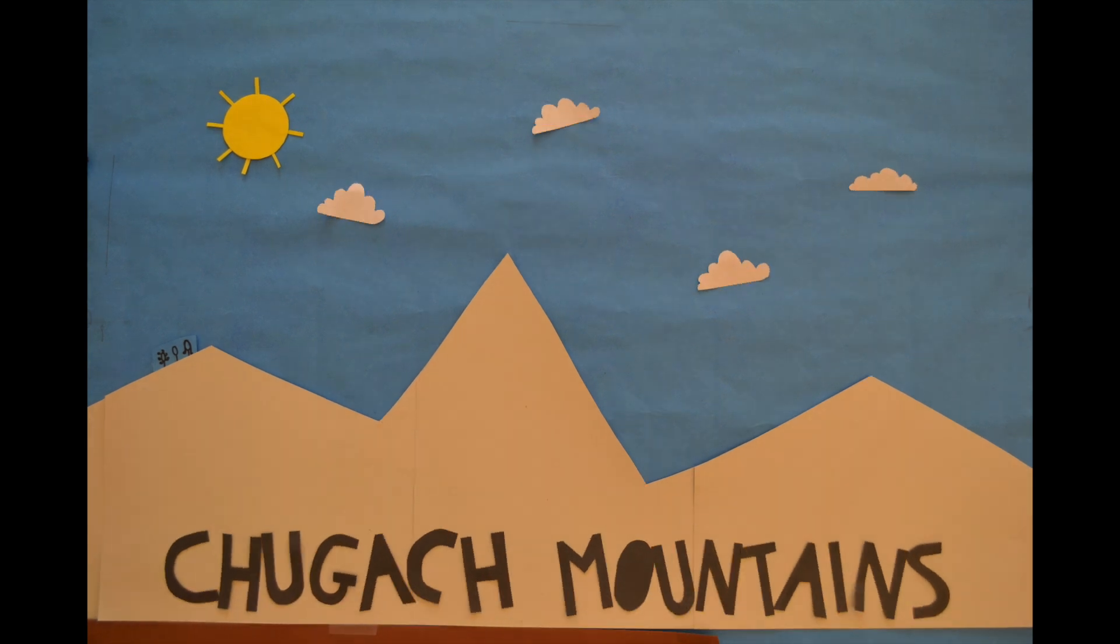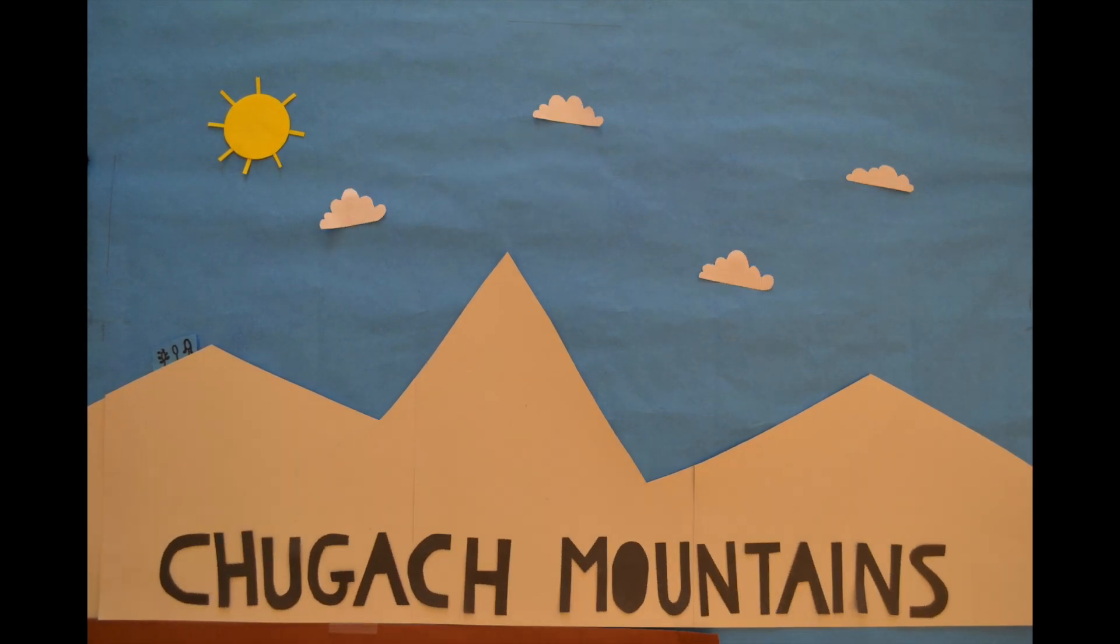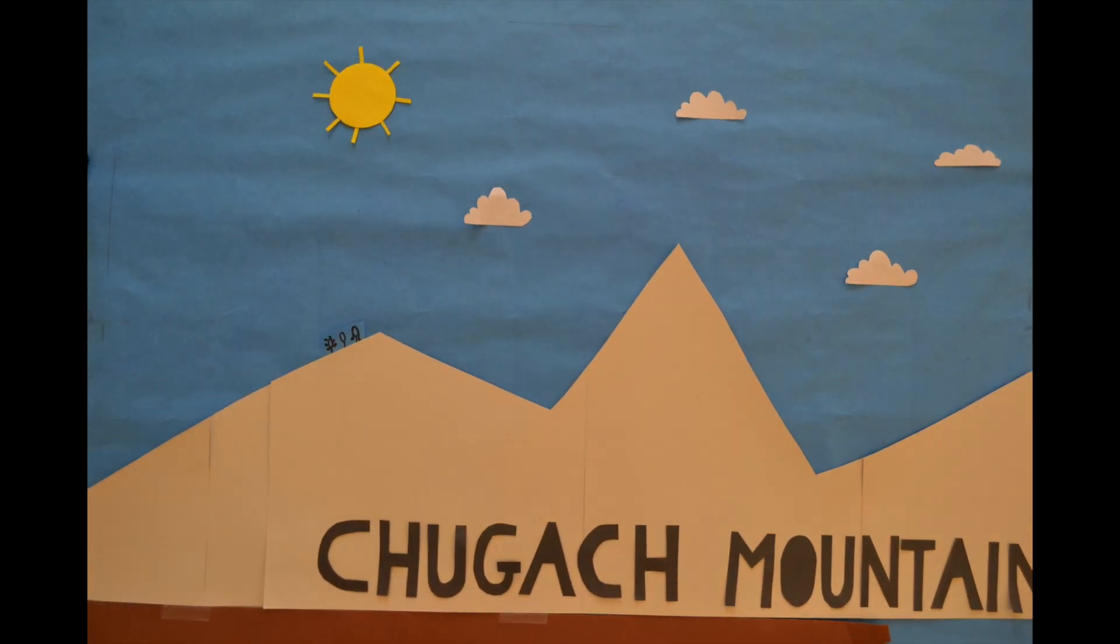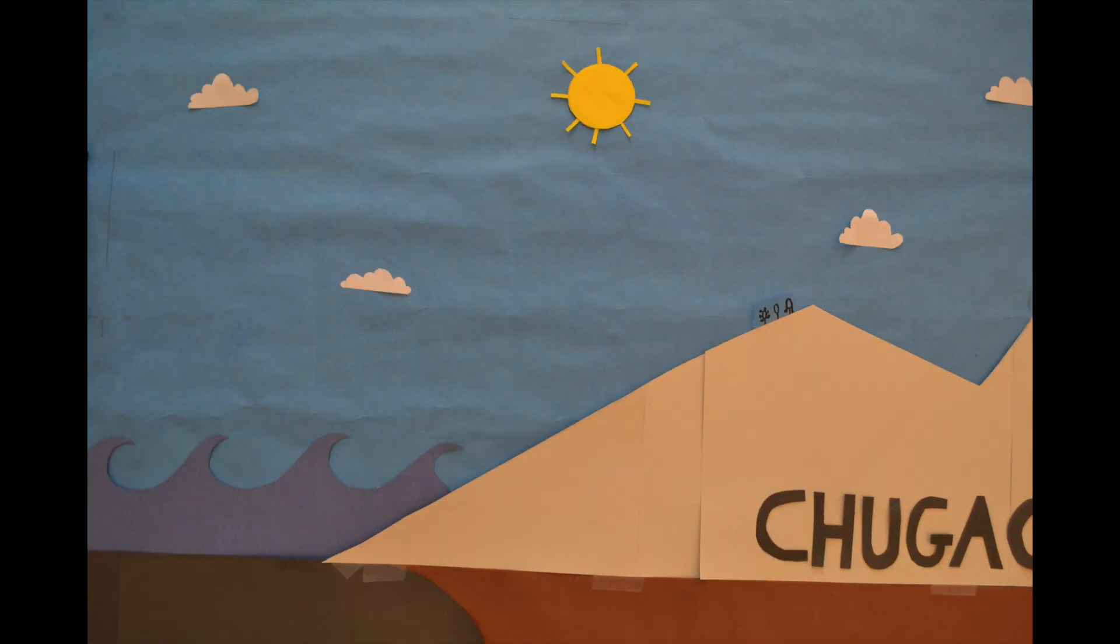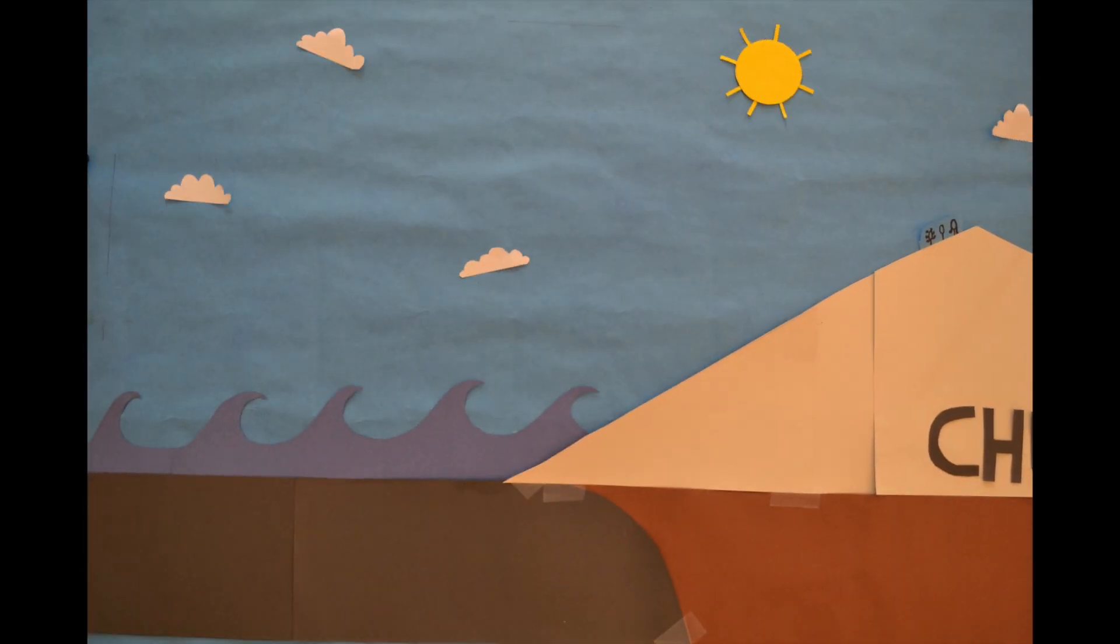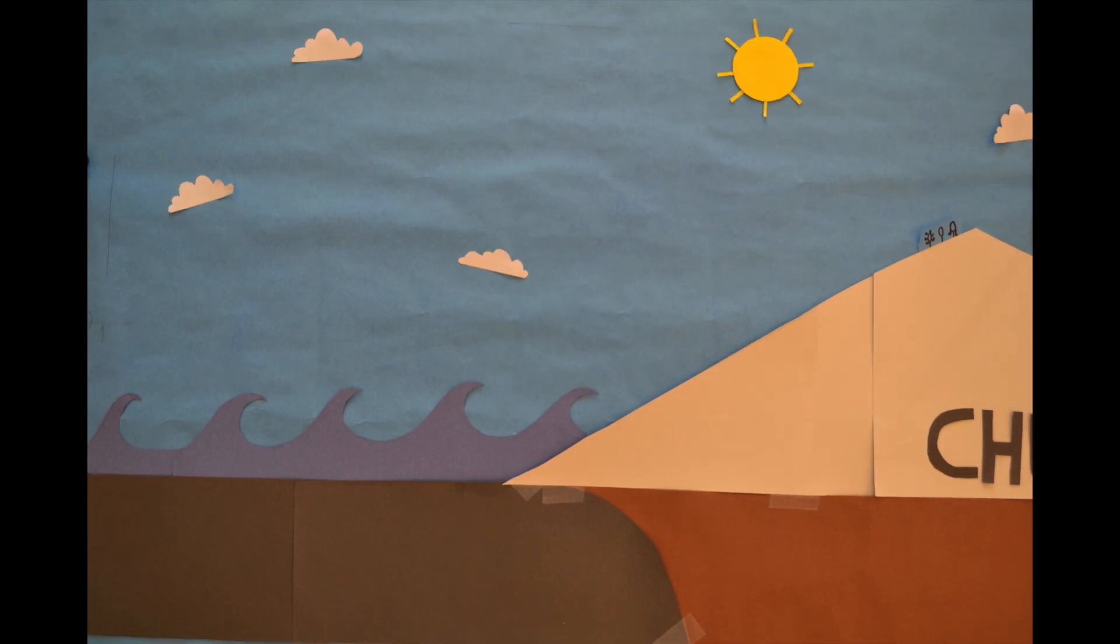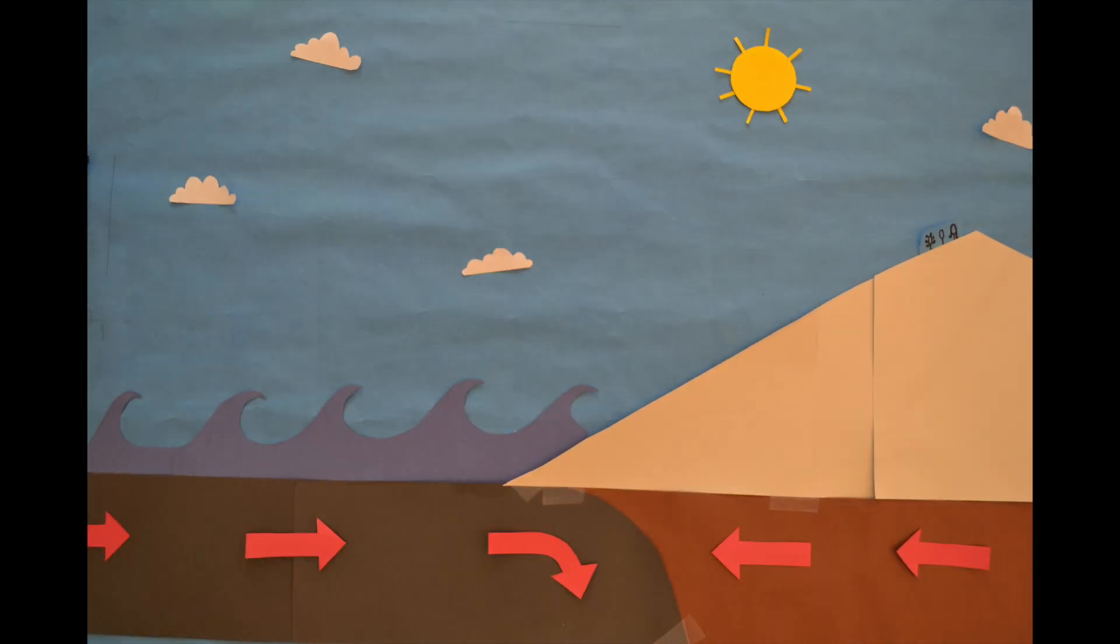The Chugach Mountains in Alaska are a great example of one way that mountains are formed. These mountains were formed due to accretion along an oceanic continental margin, causing sediment buildup along that trench. As the sinking oceanic plate pushes up against the accumulated sediment, the sediments fold up against the continent to form mountains.